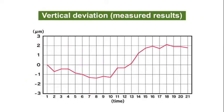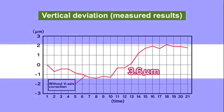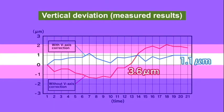Without adjustment, this system exhibited a vertical deviation of 3.6 micrometers, but with Thermal Adjust 24, the deviation was reduced to only 1.1 micrometers.